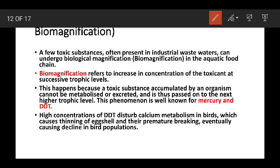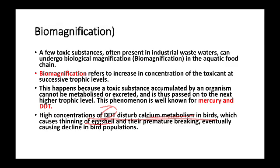Examples of bio-magnification include mercury and DDT. High concentrations of DDT disturb calcium metabolism in birds. This disruption affects eggshell formation — shells become thin — causing population decline. This is the serious ecological problem caused by bio-magnification.